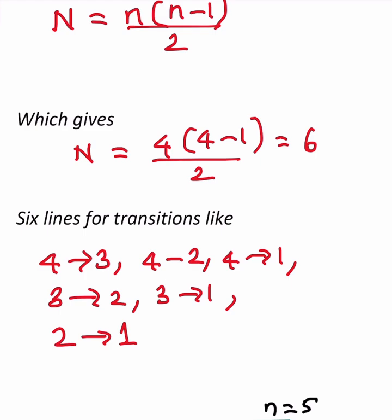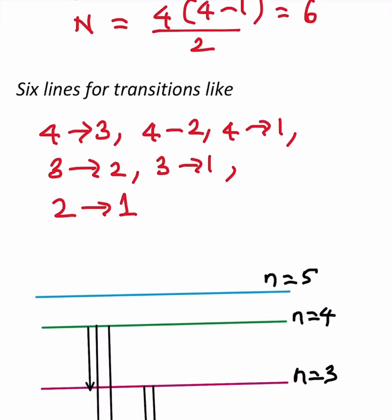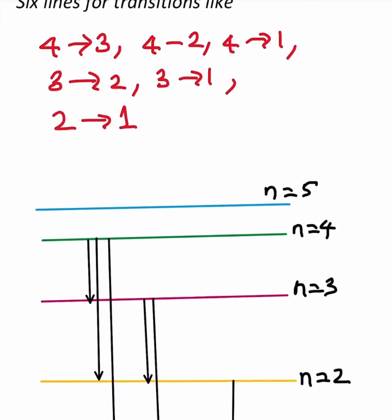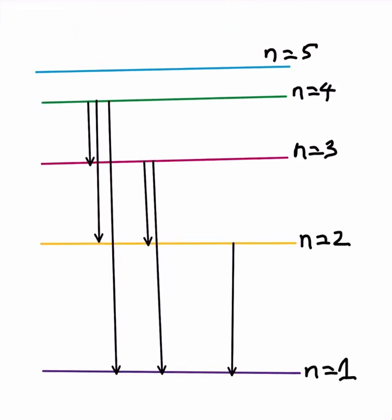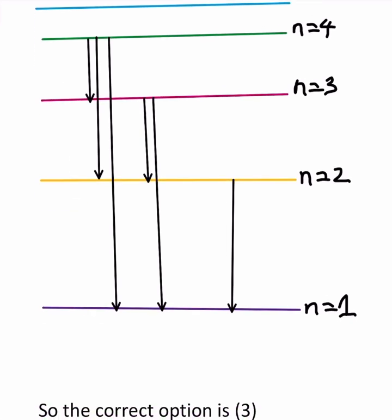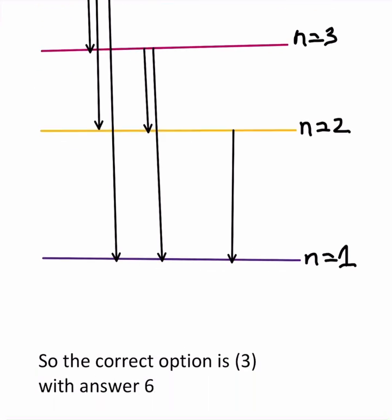So 6 lines, how they go: 4 to 3, 4 to 2, 4 to 1. Here is the picture: 4 to 3, 4 to 2, 4 to 1, again 3 to 1, 3 to 2, and the last one is 2 to 1 like this.